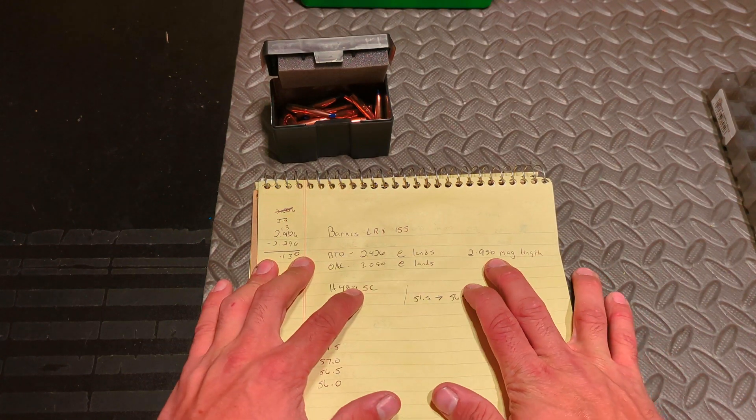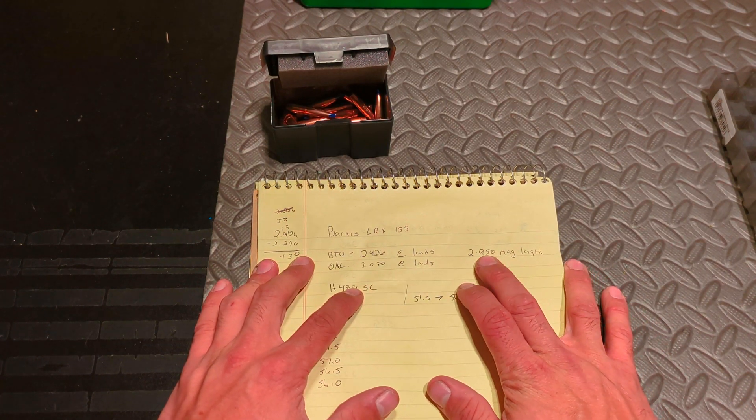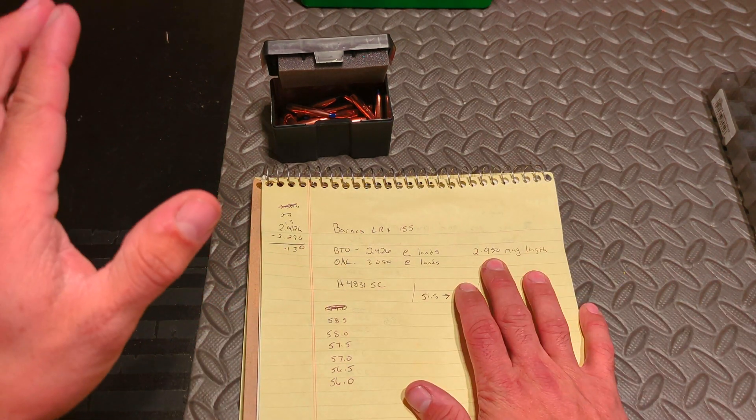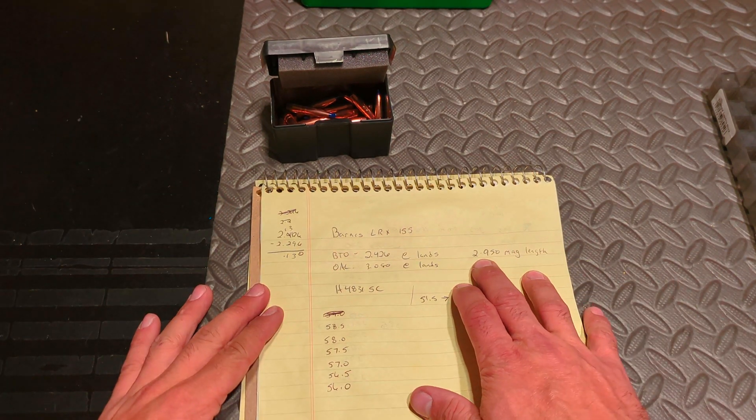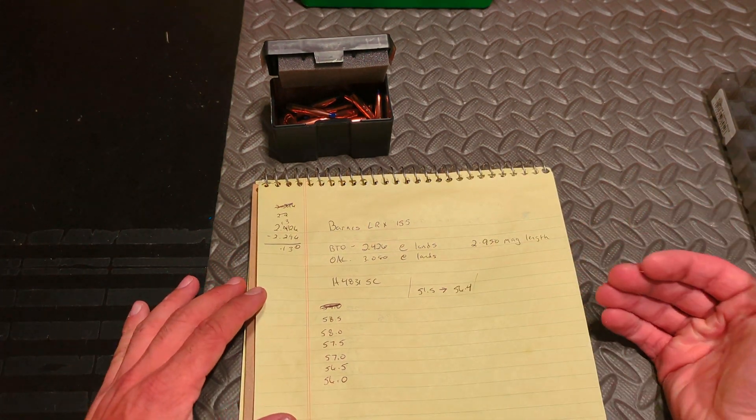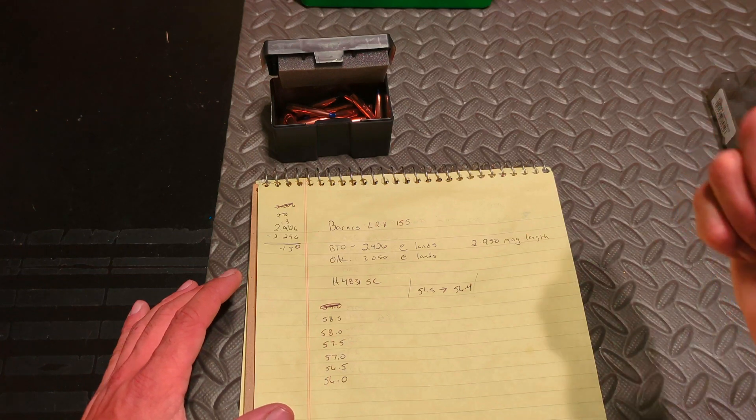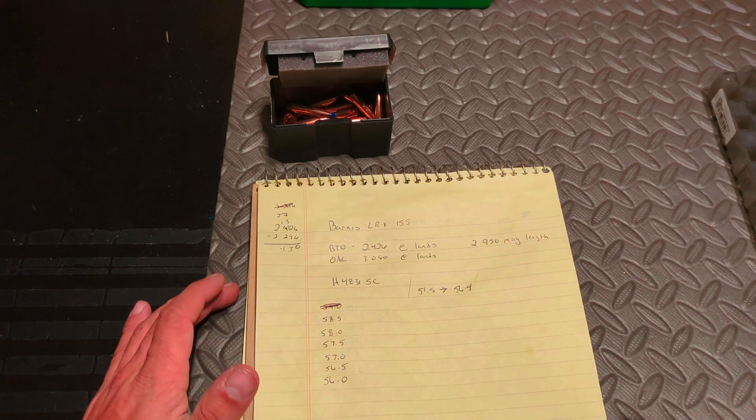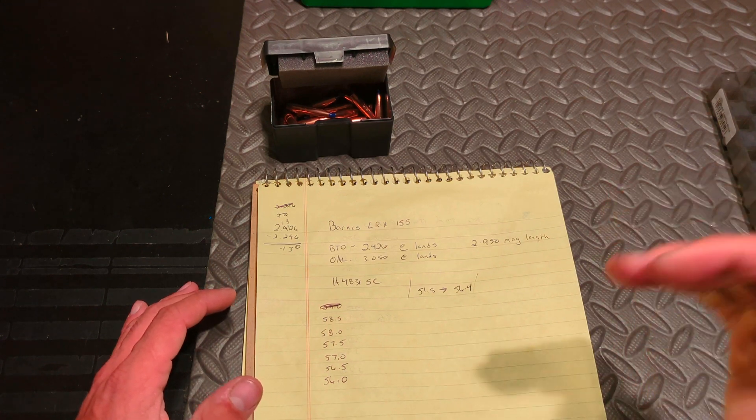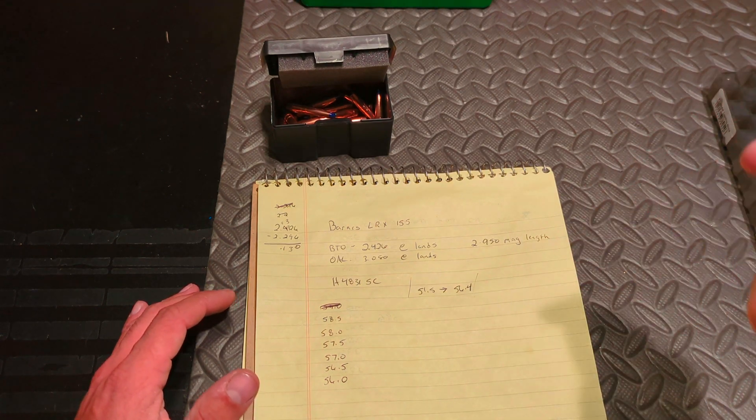However, since I am using a magazine to feed the ammo, I'm at the mercy of my magazine length. When I first seat my first bullet, I'm going to seat it to an overall length of 2.950, and I'm going to seat it a couple thousandths deeper, just so that way I get reliable feeding out of the magazines and the tip of the bullet isn't going to be dragging against the front of the magazine.